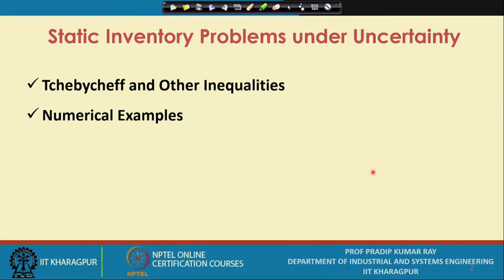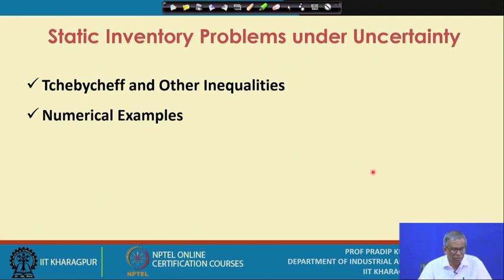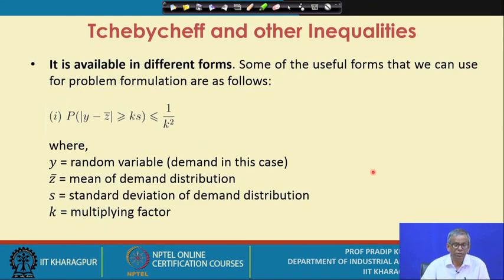During this lecture session on Static Inventory Problems under Uncertainty, I will be referring to the Chebyshev and other inequalities and will explain their application for Static Inventory Problems with a number of numerical examples. We have already mentioned the causes for using such inequalities, which are well known and used for many kinds of problems.